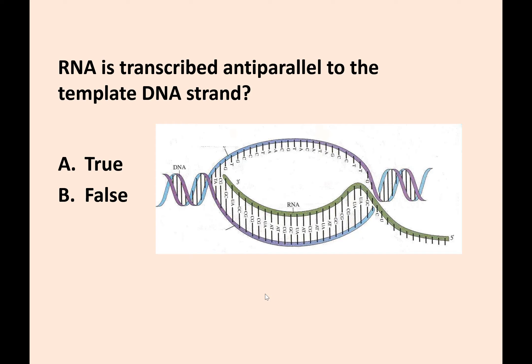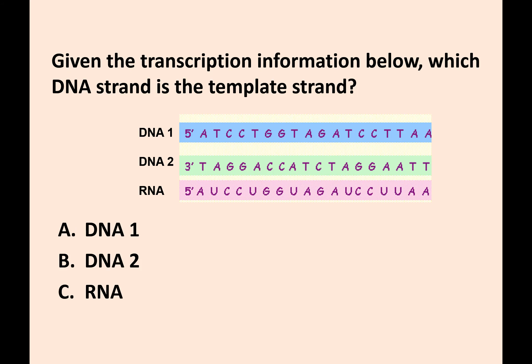RNA is transcribed anti-parallel to the DNA strand — that is correct, because the template strand is the one it's base pairing with. Given the transcription information, to figure out which DNA strand is the template strand, you look for base pairing: which strand does the RNA base pair with? In this case, it's DNA 2 — you can see the base pairing there.